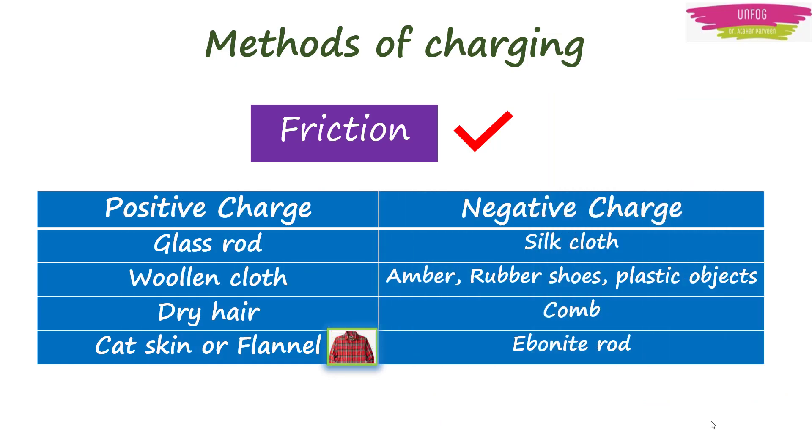Now, let's make a note of the materials gaining different charge upon friction. Objects like glass rod, woolen cloth, dry hair, cat skin or flannel gain positive charge, while materials like silk cloth, amber, rubber shoes, plastic objects, comb, and ebonite rod gain negative charge upon friction.